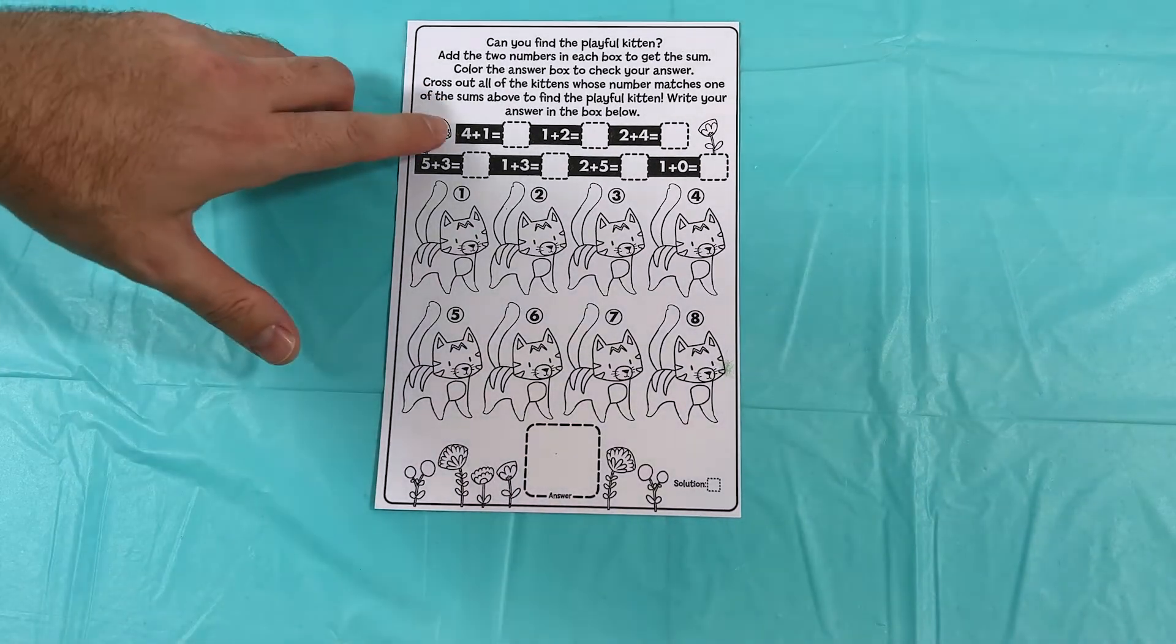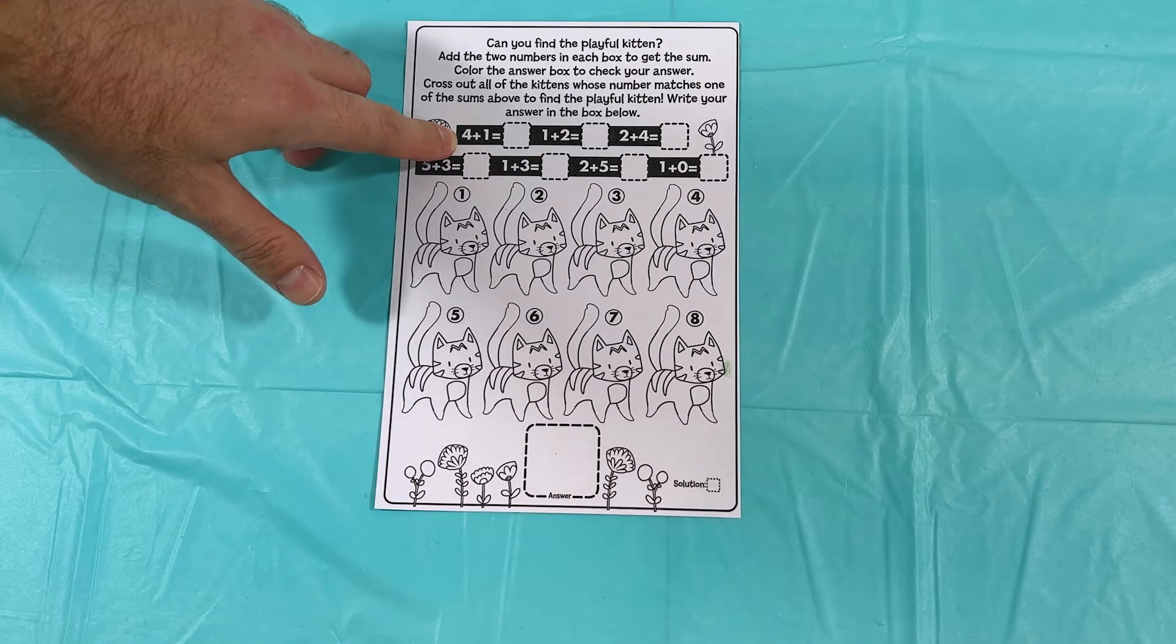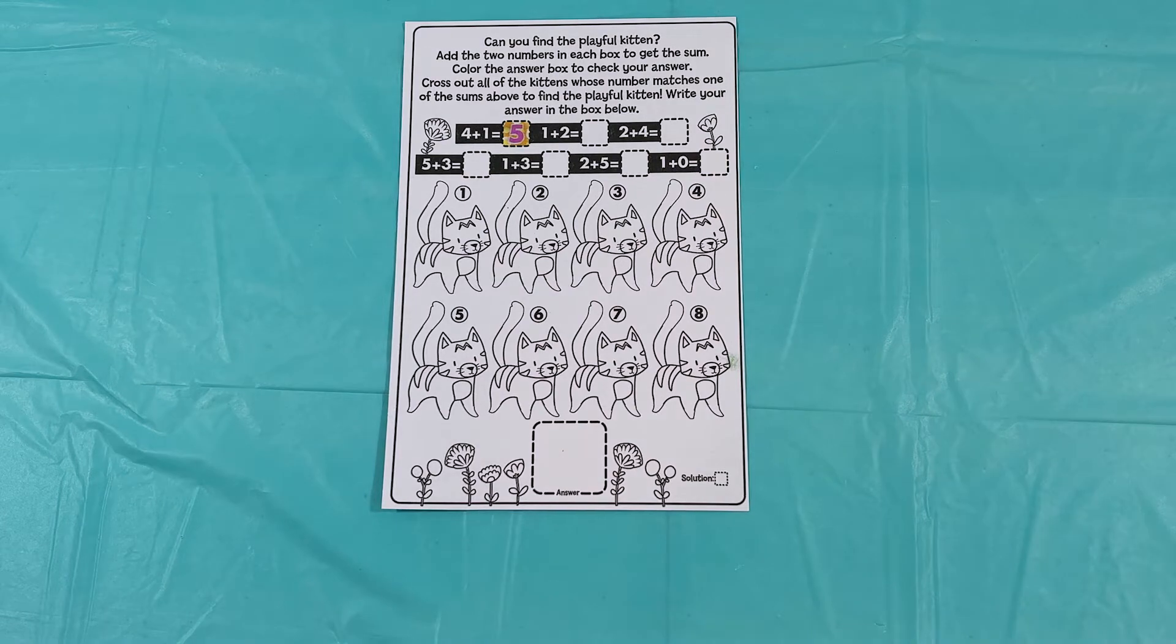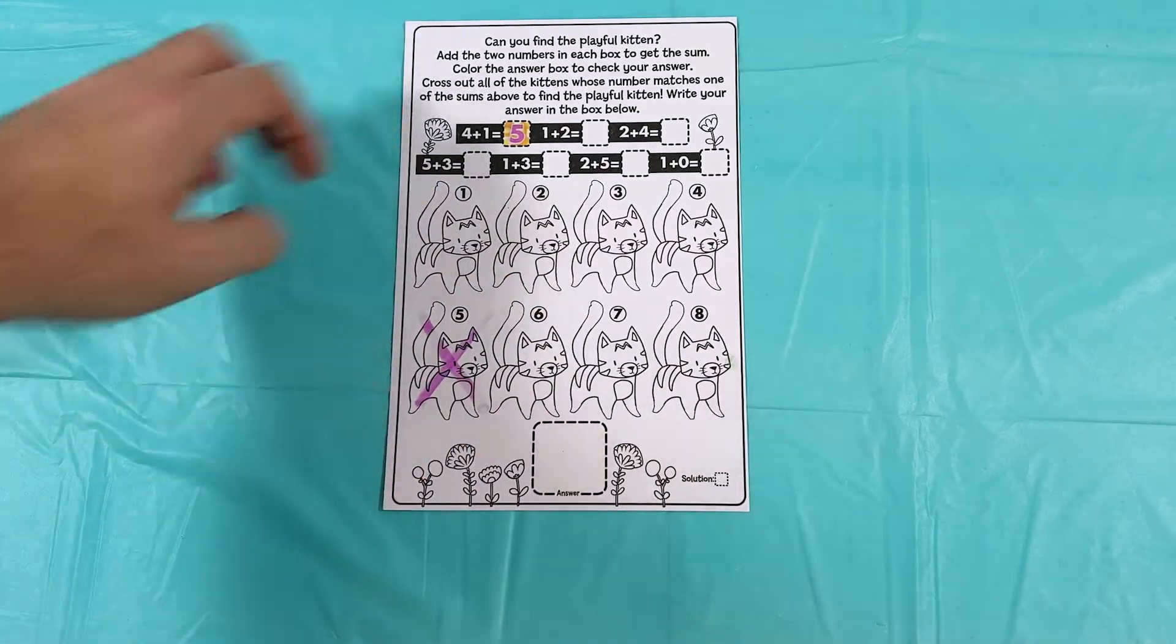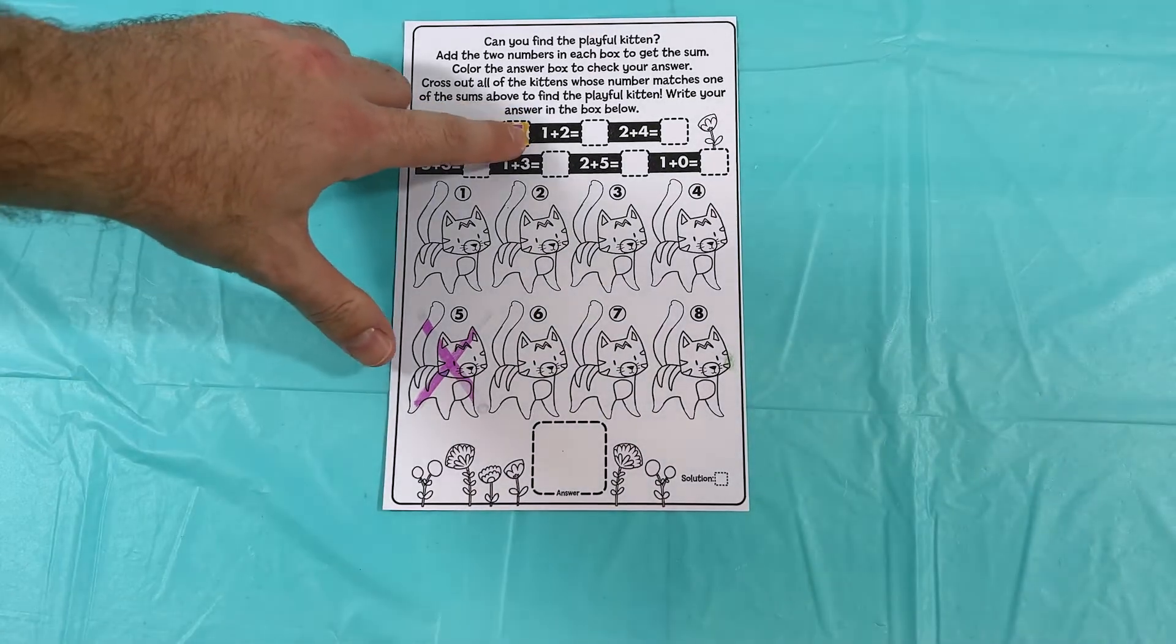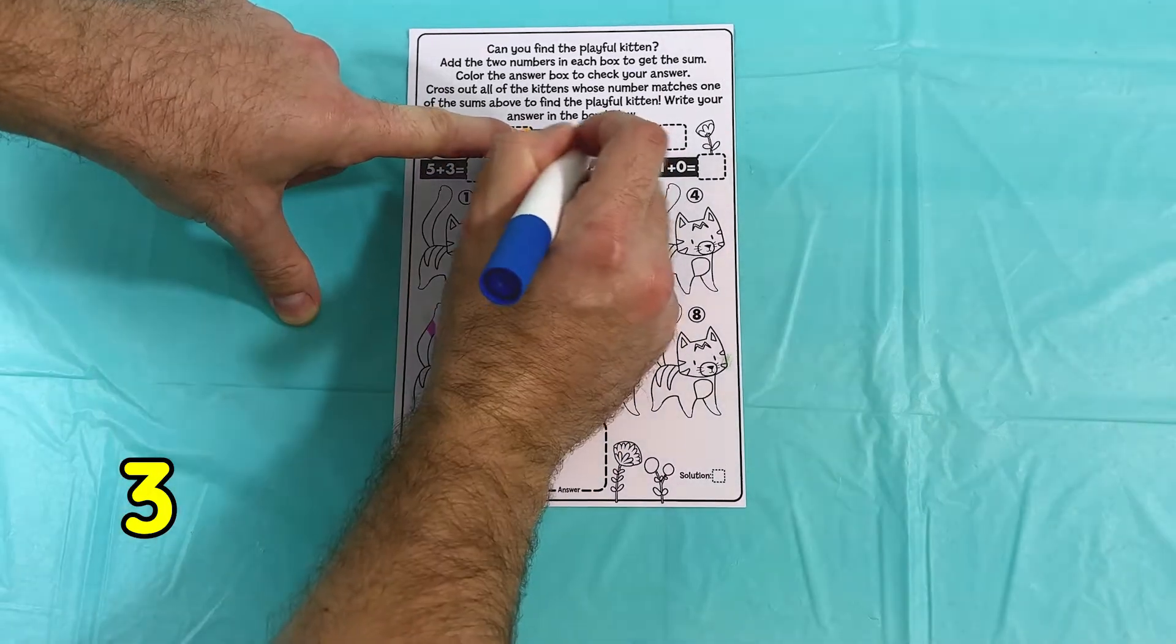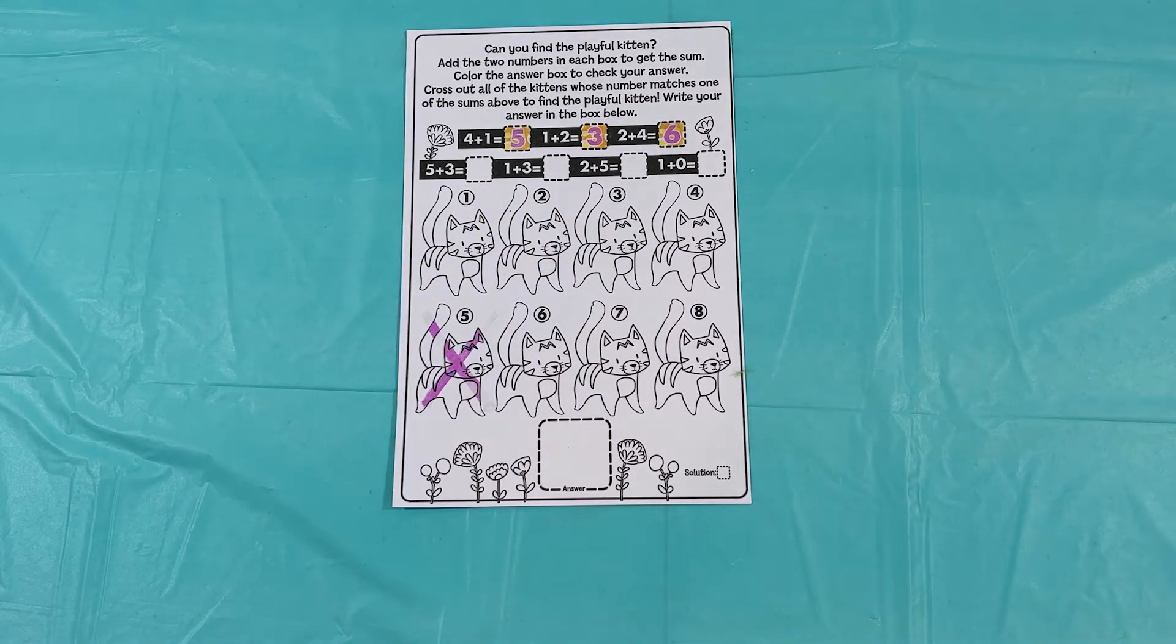Okay, so this first one here, four plus one. That's right, it's five. It's five. So we're going to go ahead and cross out cat number five. All right. Next we have this problem, one plus two. That's right, it's three. Okay. So we're going to cross out cat number three now.